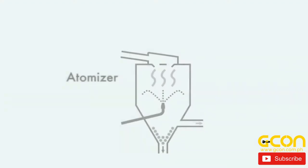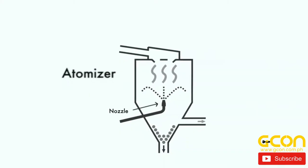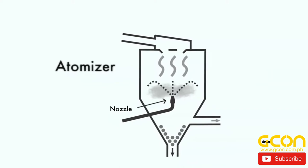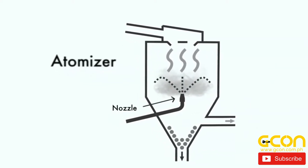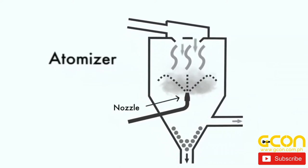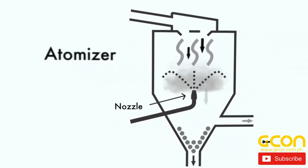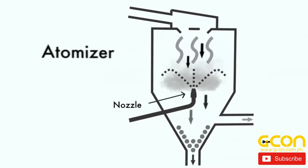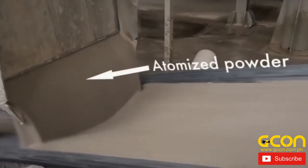The atomizer is equipped with a nozzle. The nozzle sprays the slurry into the middle of a large tank that is fed with a current of hot air. As the slurry becomes airborne, it rapidly dries to form atomized powder.